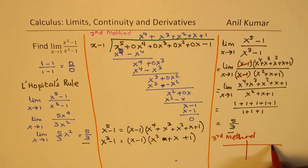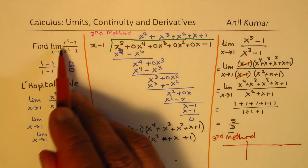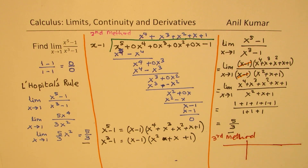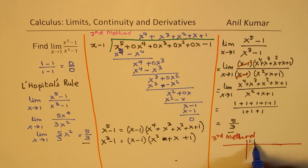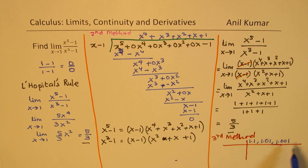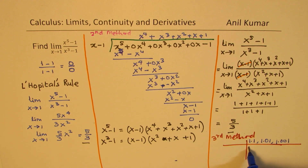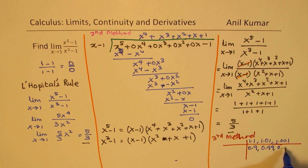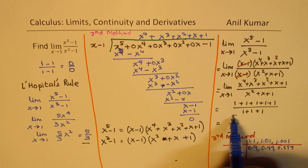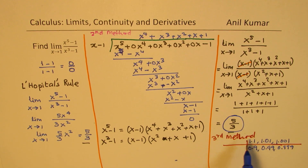You can find the values for this limit approaching from the right side: 1.1, then 1.01, then 1.001. And from the left side: 0.9, 0.99, and 0.999. You will see that the value approached is 5 over 3. So that is the third method of solving the same question.